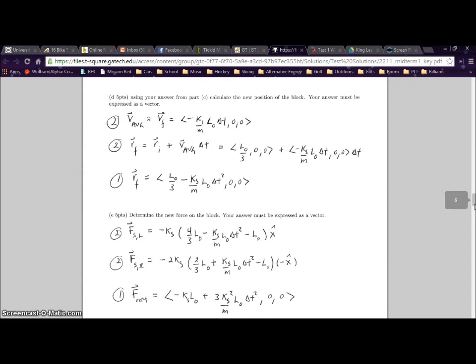We know that the change in position we calculated in part D is going to be in the negative direction. In part D, in our final answer, we have L0/3 minus KS L0 delta T squared over M. L0/3 was our initial position.